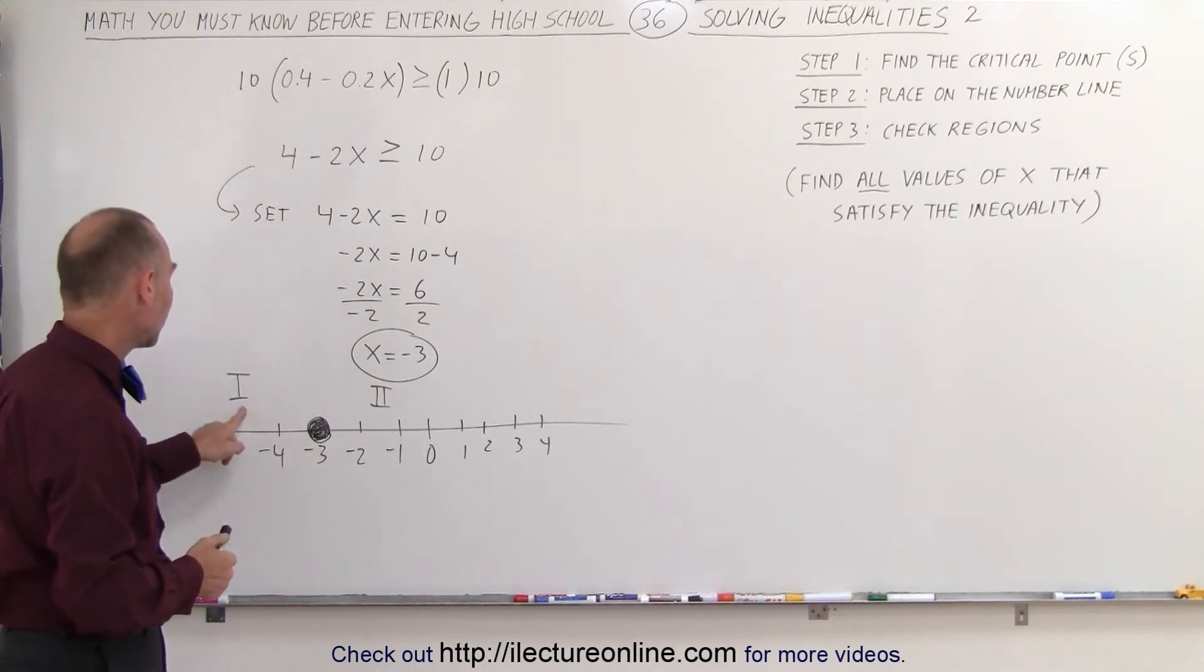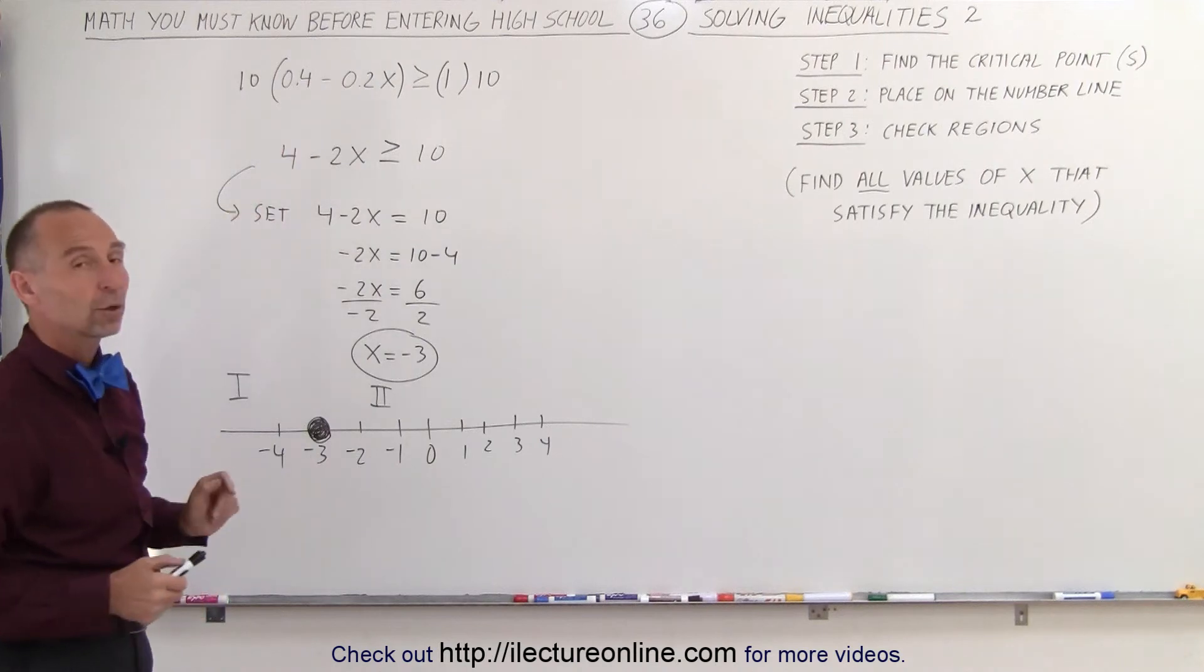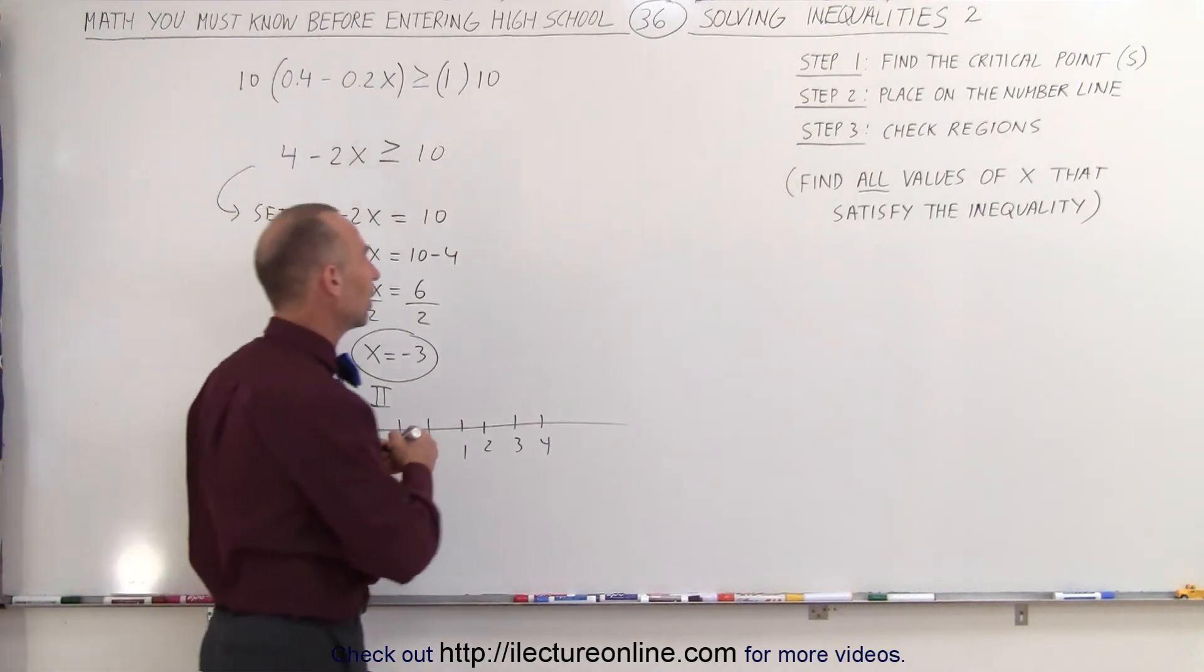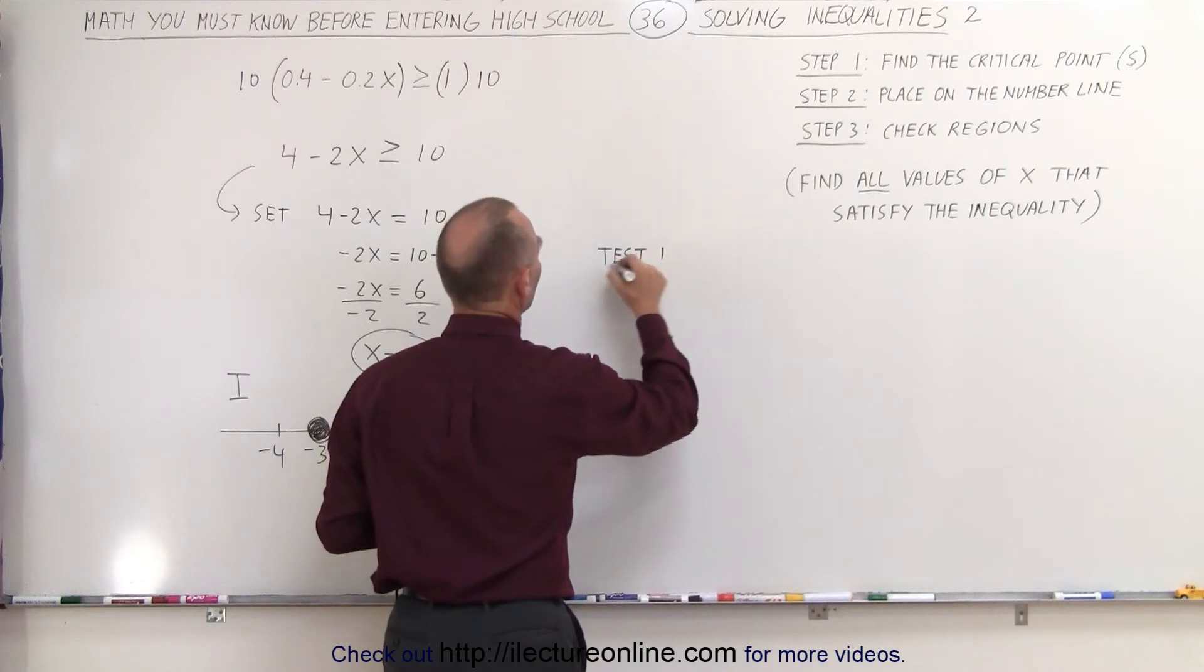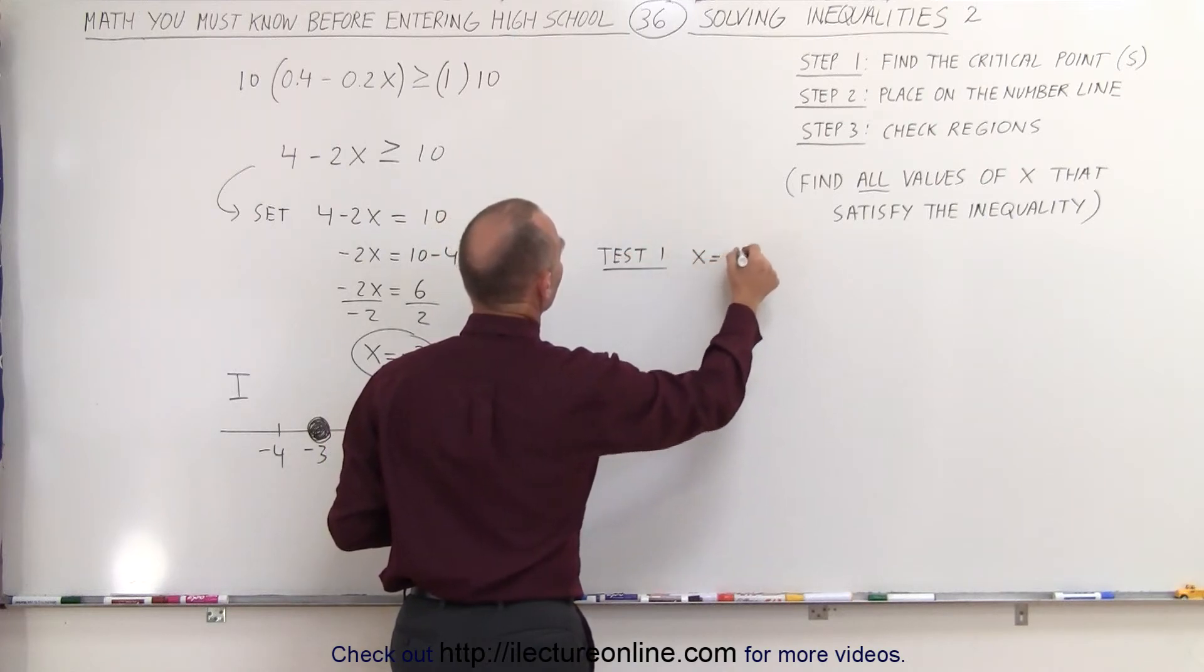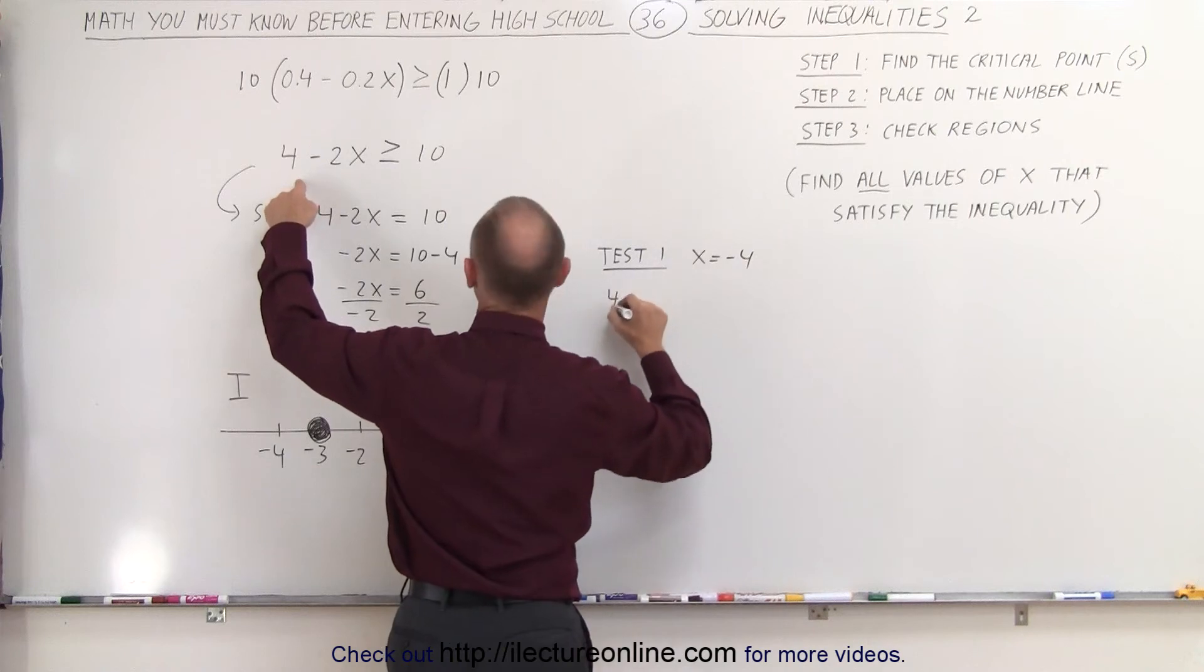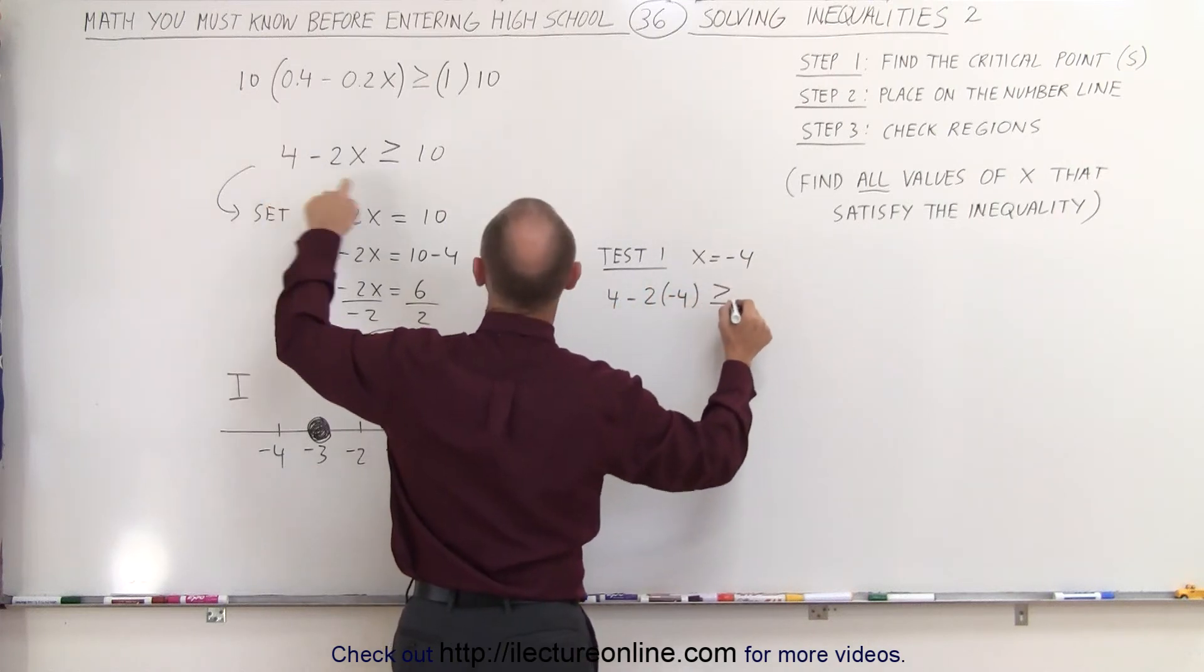For example, we'll pick negative 4 out of region 1 and test our inequality to see if it satisfies inequality. So, we're going to do test 1. We're going to let x equal negative 4.